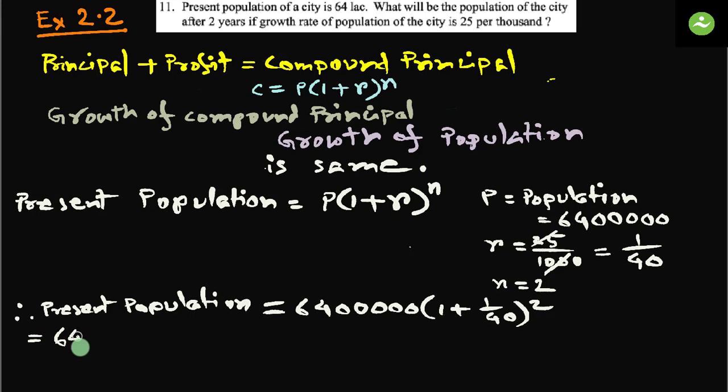Equals to 64 lakhs into 1 plus 1 by 40 means 41 by 40. 41 by 40. Now power is 2 so we have to multiply it twice, 41 by 40 again.